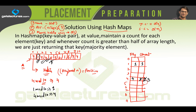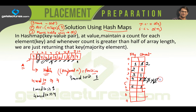The next number is 3: 3 mod 10 gives position 3, so 3 is stored there with count 1. Next is 2: stored at position 2 with count 1, since 2 mod 10 is 2. Then 1 repeats, so the count of 1 becomes 2. Next is 6: stored at position 6 with count 1. Then 4 appears again with count 5, and once more making the count 6.